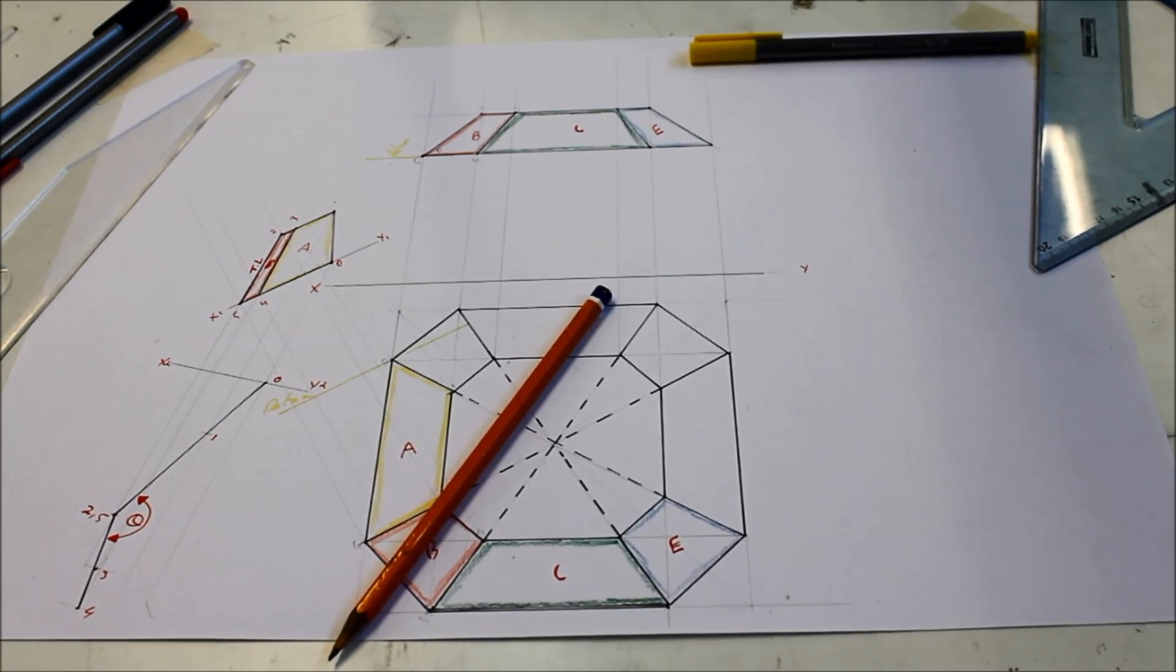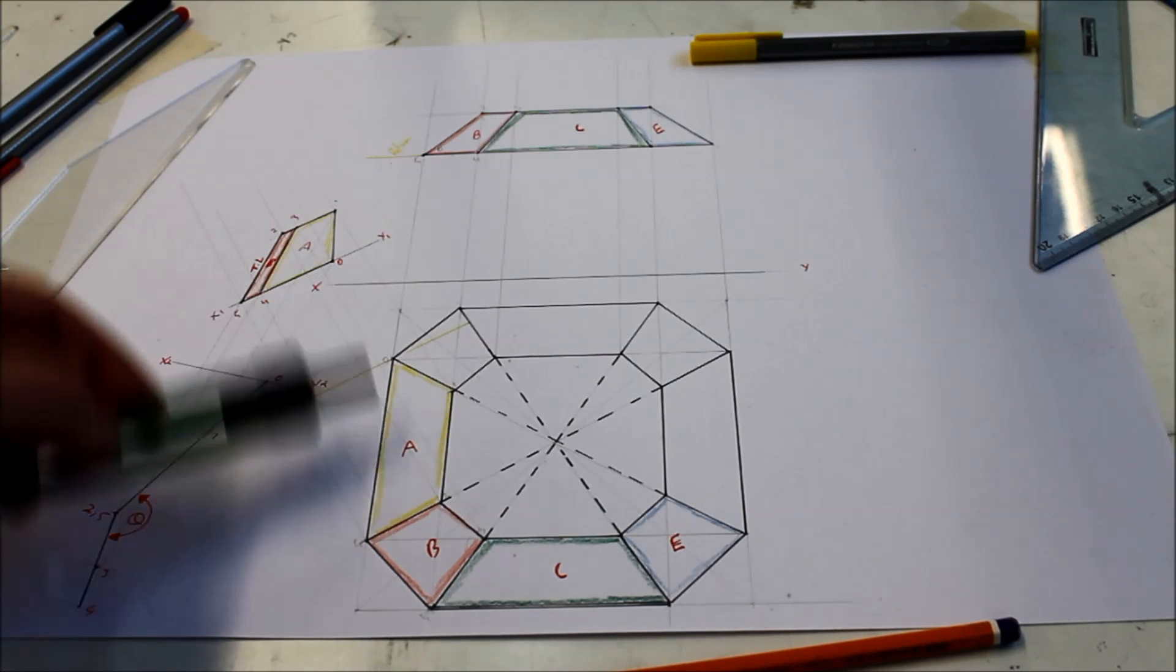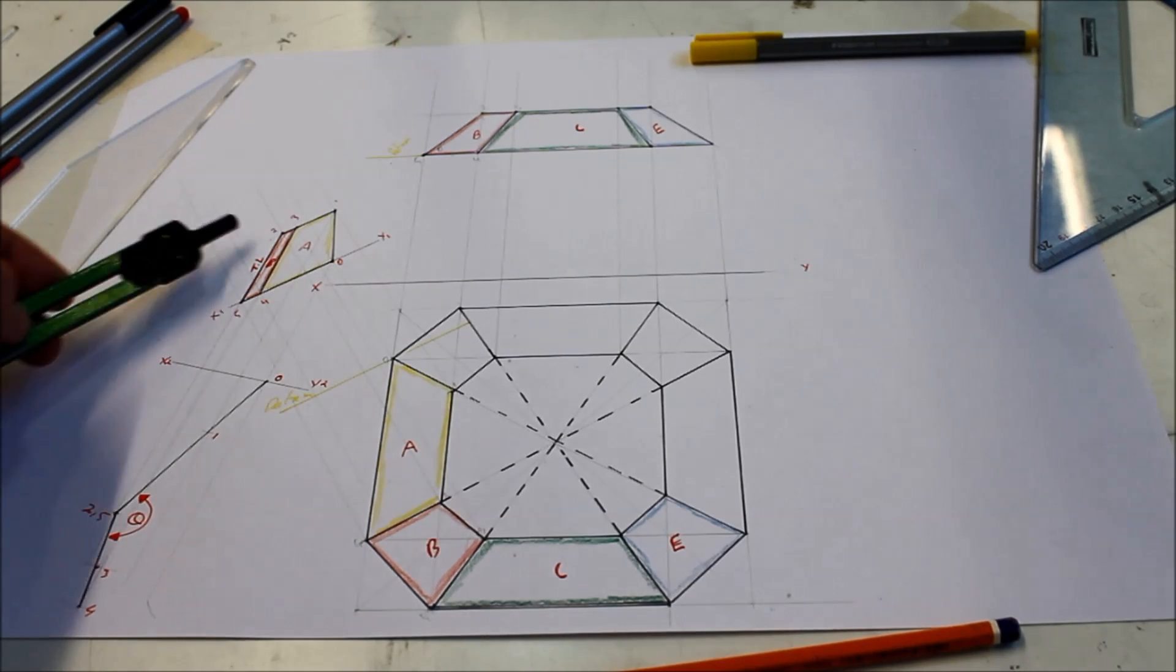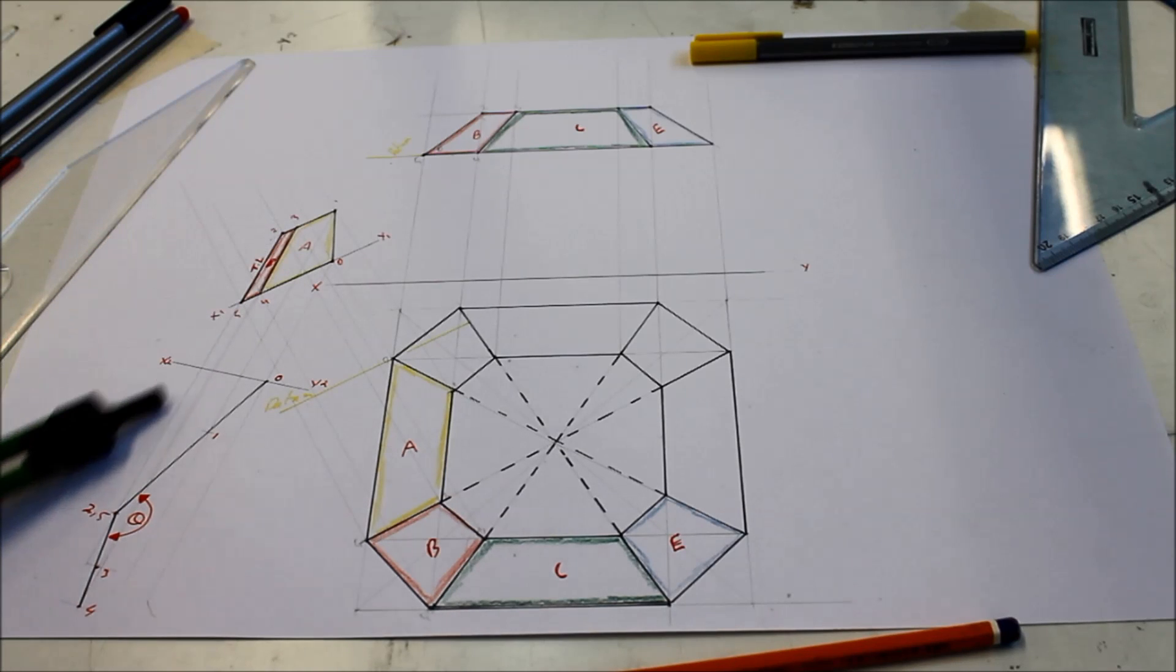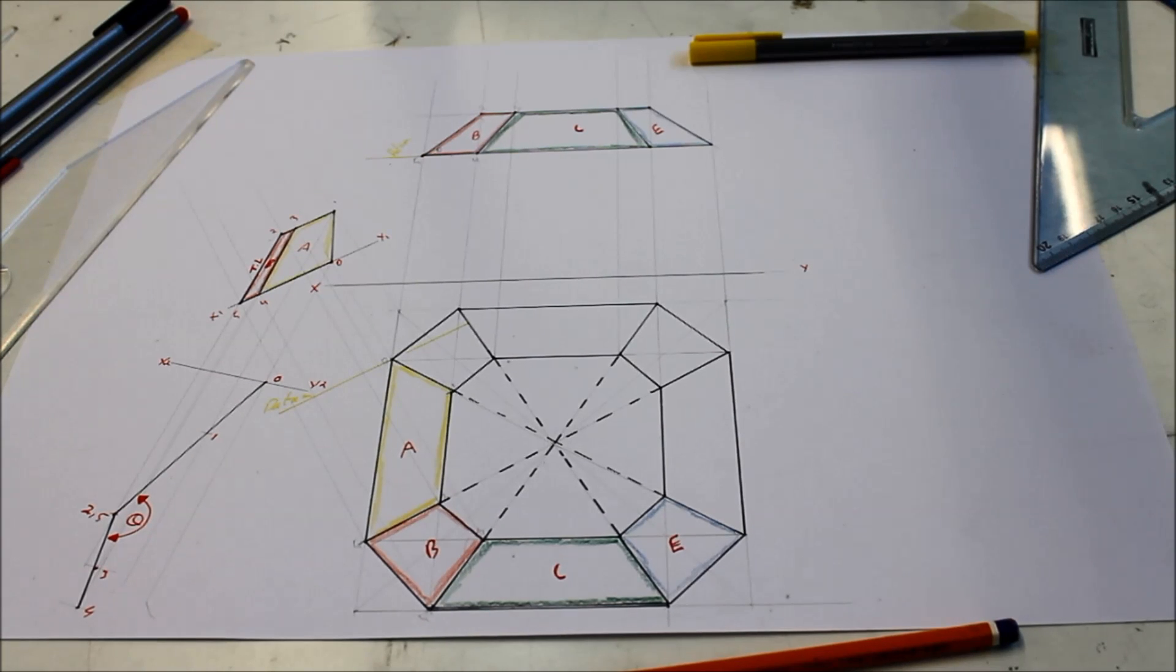That is your dihedral angle. First, we found a true length of the line of intersection, which was these points two and five, this line here between the two surfaces. Then you projected a point view of that line of intersection to give you an edge view of surfaces A and B to find your dihedral angle. That was part B done.